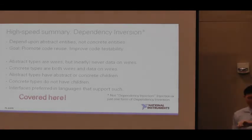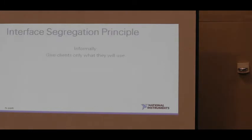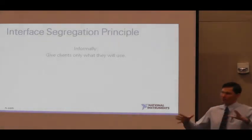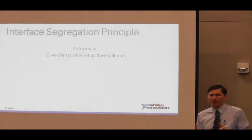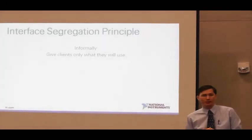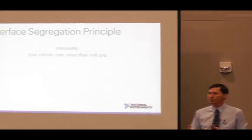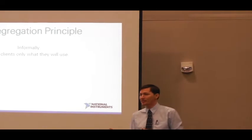All right, that was eight minutes — that was our goal. So we're going to cover these two, and we're going to begin with the Interface Segregation Principle. Informally, what this means is that you only give clients what they're going to use. It is possible to deliver more functionality than clients are actually going to use, and sometimes that's a bad thing. You can result in a user interface with so many widgets they're not sure what to click on.